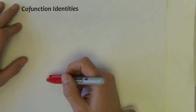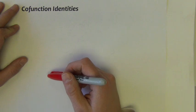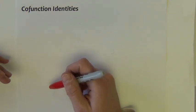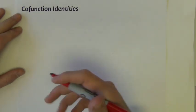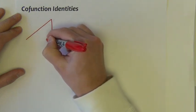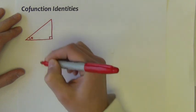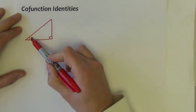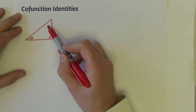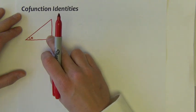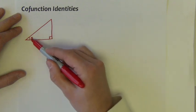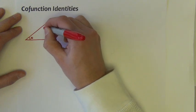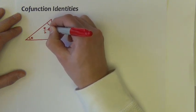The next set of fundamental identities are called cofunction identities. They aren't used that often, but it's pretty obvious when you need them because they have a unique form. To understand why they work, consider a right triangle with one angle labeled theta. In any right triangle, the two acute angles must add to 90 degrees. So if one acute angle is theta, the other is 90 degrees, or Pi over 2 minus theta.